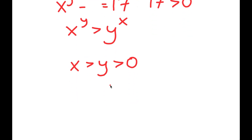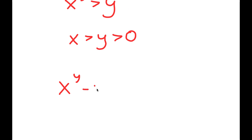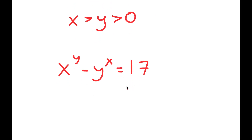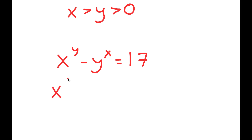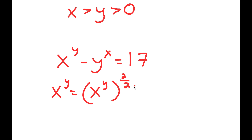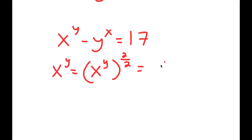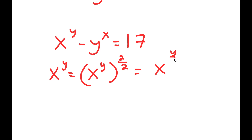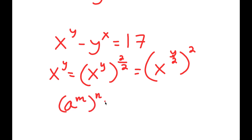Now that we know this, I'm going to rewrite my equation: x to the power of y minus y to the power of x is equal to 17. I can rewrite x to the power of y as x to the power of y to the power of 2 over 2, because 2 over 2 equals 1. This can then be rewritten as x to the power of y over 2, all to the power of 2, using the rule that a to the power of m to the power of n equals a to the power of m times n.